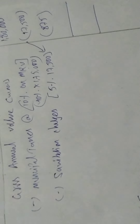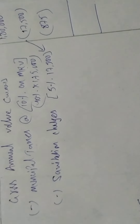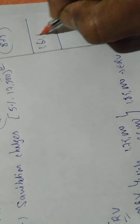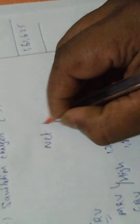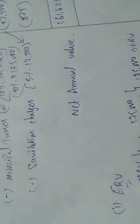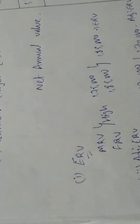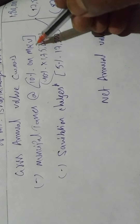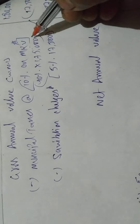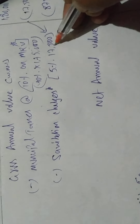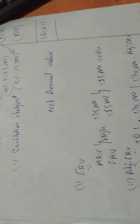So: 1,80,000 minus 17,500 minus 875 = 1,61,625. This is the Net Annual Value. The new point here is sanitation charges — municipal taxes is always calculated on MRV, and then 5% of that is charged as sanitation/sanitization charges. NAV = 1,61,625.